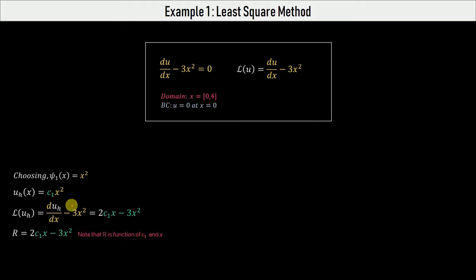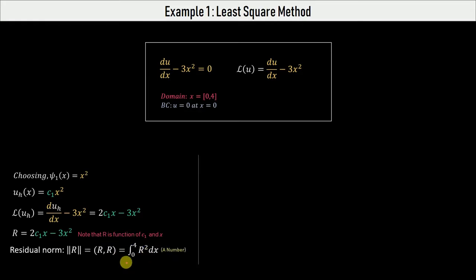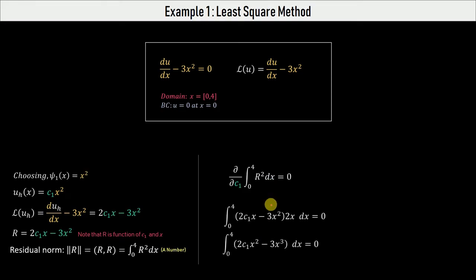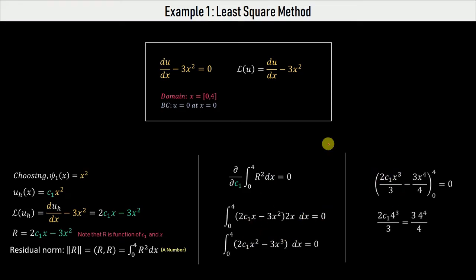Since this is the least square method, we calculate the residual norm, which is simply the inner product of the residual with itself — and note that this is a number. We then minimize this norm with respect to c1 by taking the partial derivative of the residual norm with respect to c1 and setting it to zero. After going through these calculations we finally arrive at c1 equals 4.5, which is the value when ψ₁ = x².